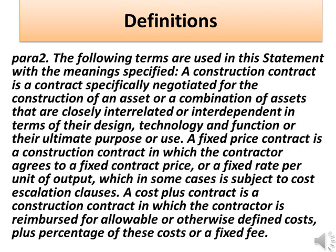Definitions — Para 2: The following terms are used in this statement with the meanings specified. A construction contract is a contract specifically negotiated for the construction of an asset or a combination of assets that are closely interrelated or interdependent in terms of their design, technology and function or their ultimate purpose or use. A fixed price contract is a construction contract in which the contractor agrees to a fixed contract price or a fixed rate per unit of output, which in some cases is subject to cost escalation clauses. A cost-plus contract is a construction contract in which the contractor is reimbursed for allowable or otherwise defined costs, plus a percentage of these costs or a fixed fee.